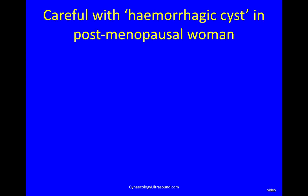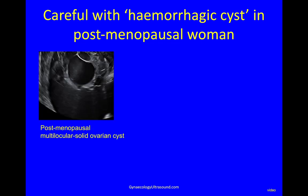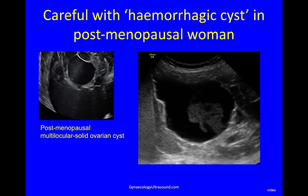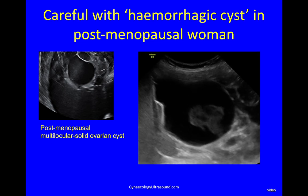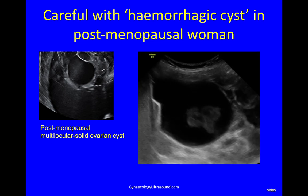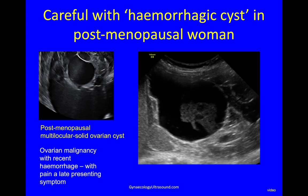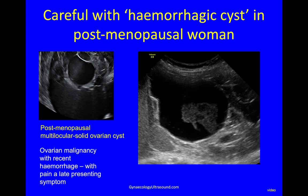Be very careful in postmenopausal women when diagnosing a hemorrhagic cyst, because they shouldn't have one. In this example a postmenopausal woman had a large multilocular solid ovarian cyst with a hemorrhagic component — you can see the clot wobbles. This is quite a common presentation for ovarian malignancy, which has a tendency to haemorrhage into the cyst, and pain would then be a late presenting symptom.